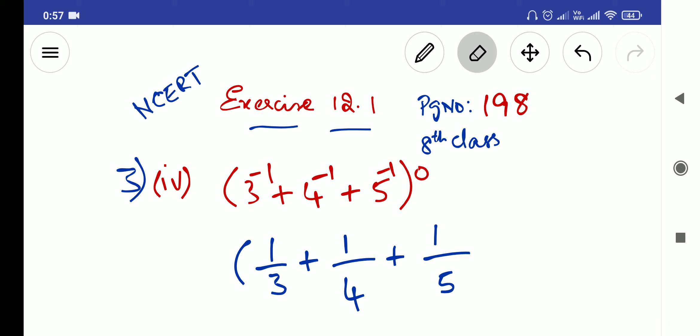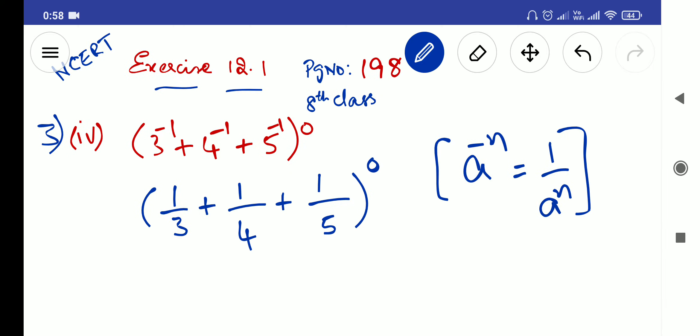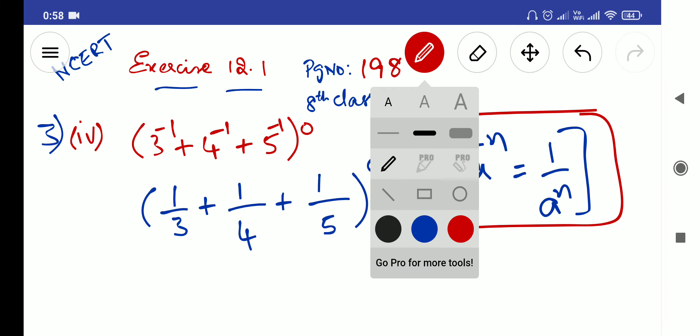So whole power 0. See here, this step we have written because a power minus n is equal to 1 by a power n. So we have applied this a power minus n is equal to 1 by a power n law for all the three terms inside.